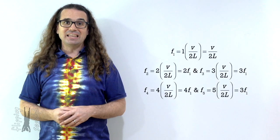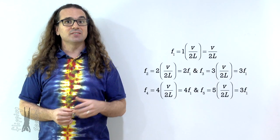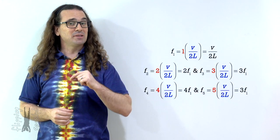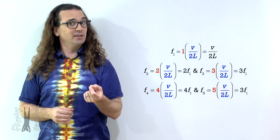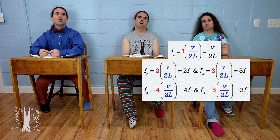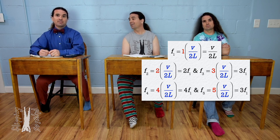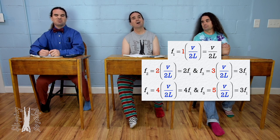Did you notice that each of the harmonics is the harmonic number times the fundamental frequency? That means each of the harmonics is an integer multiple of the first harmonic, or the fundamental frequency. That is pretty cool. Let's take a moment to look at and hear what these frequencies sound like.